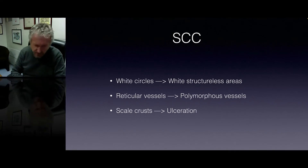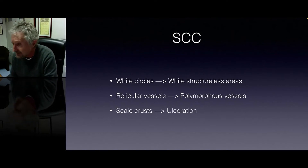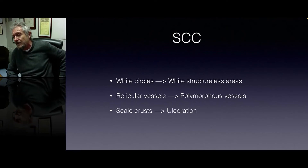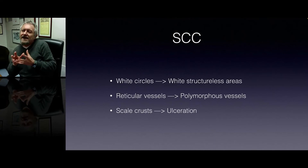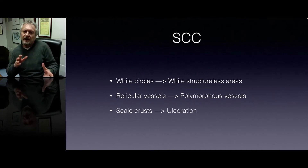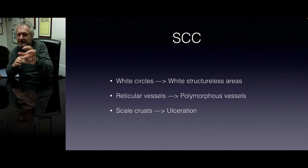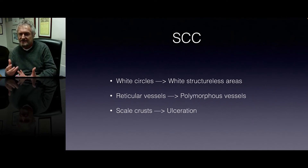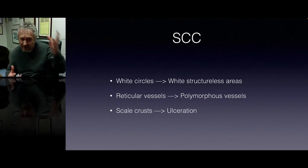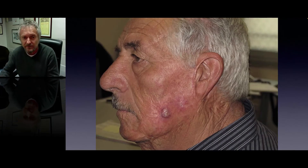Squamous cell carcinoma is definitely an expanding disease — it's becoming more and more frequent, especially because the population is becoming much older than in the past. Morphologically, the criteria are very similar to those for actinic keratosis, but instead of white circles, we see a much more structureless white coloration. In SCC, we see white structureless areas, instead of reticular vessels we see polymorphous vessels, and instead of scale crust we start to see ulceration.